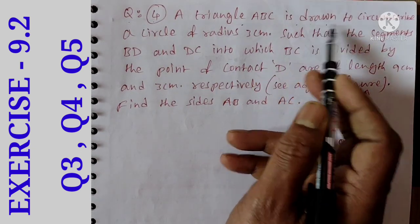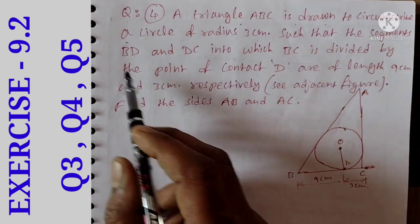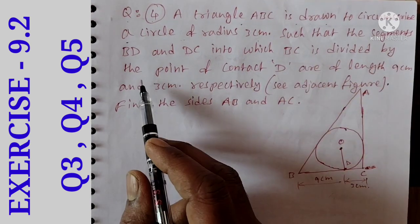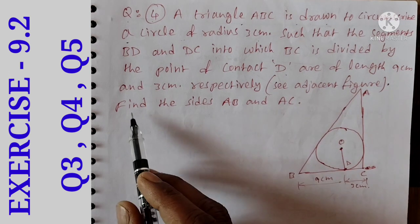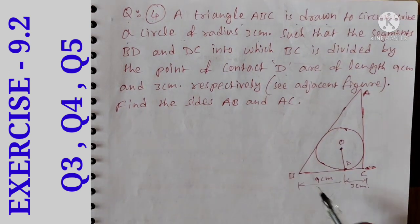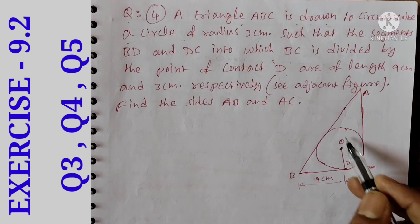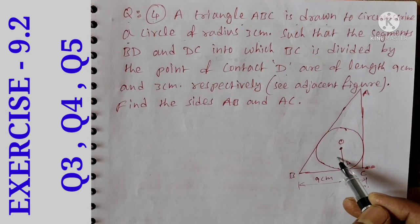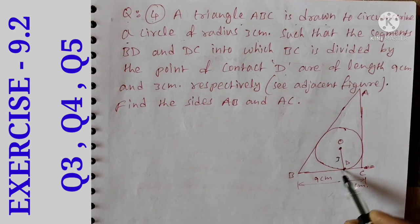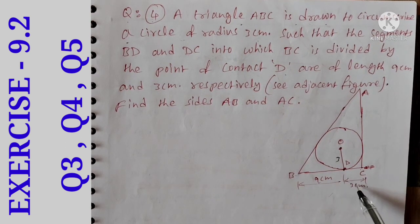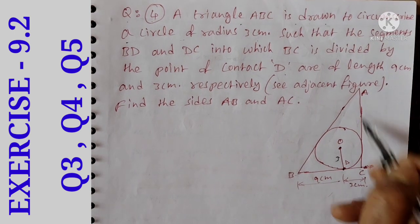Question number 4: A triangle ABC is drawn to circumscribe a circle of radius 3 cm such that the segments BD and DC, into which BC is divided by the point of contact D, are of length 9 cm and 3 cm respectively. Find the sides AB and AC.